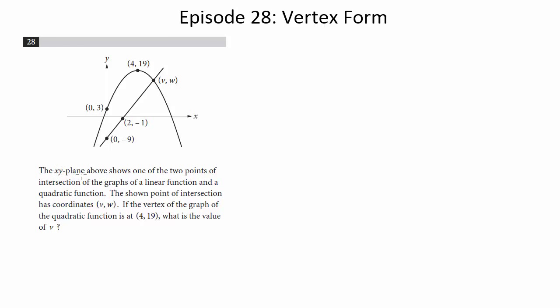Number 28. The x-y plane above shows one of the two points of intersection of the graphs of a linear function and a quadratic function. The shown point of intersection has coordinates v,w. If the vertex of the graph of the quadratic function is at 4,19, what is the value of w?